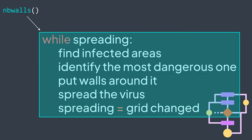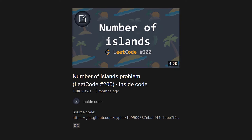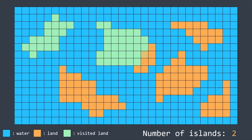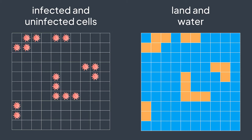For the infected areas, if you remember from a previous video, we solved the number of islands problem — given a grid where one represents land and zero represents water, we find connected four-directionally adjacent cells of land. We have the same situation here, just with infected and uninfected cells instead of land and water. This is an interesting point: both problems look different but their solution is the same, which shows you should understand solutions and not memorize them. Flood fill is done with either depth-first search or breadth-first search.